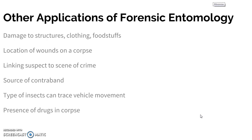Forensic entomology can also link a suspect to a crime scene — there have been cases where a spider or insect found on a suspect was prevalent at the crime scene. It can help identify sources of contraband, and certain insects can trace vehicle movement: every time we drive, insects hit the front grill of our car, so investigators can determine where a person has been based on those insects and their migratory paths. You can also determine the presence of drugs in a corpse by testing the insects and their toxicology to determine what substances were found inside the body.